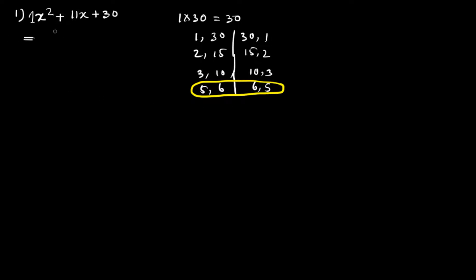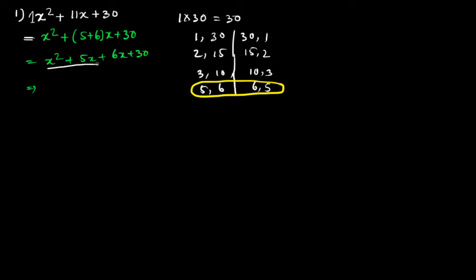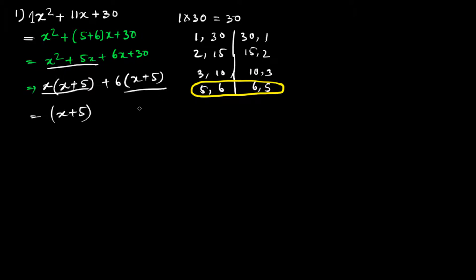So 11 can be written as 5 + 6. We get x² + 5x + 6x + 30. From the first two terms we take x common, giving x(x + 5), and from the last two terms we take 6 common, giving 6(x + 5). Then x + 5 is common, leaving us with (x + 5)(x + 6). That's the answer.